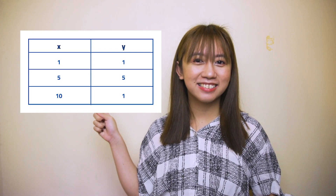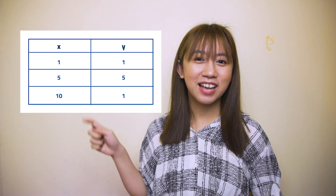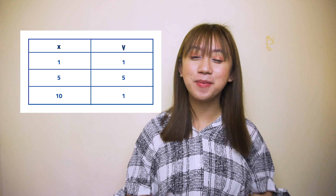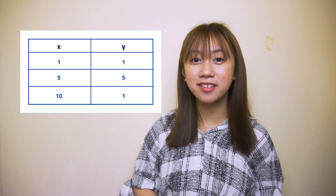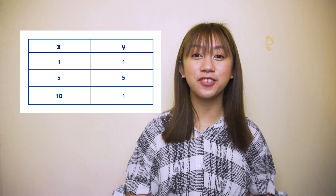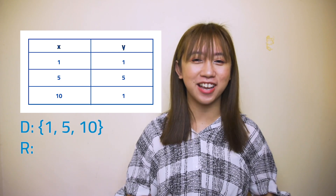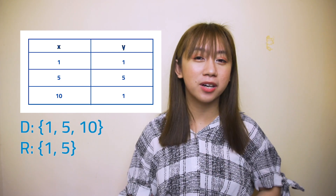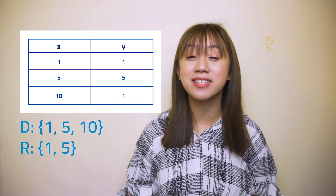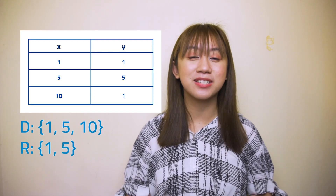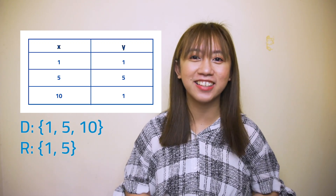How about this? Awesome! The set of domains are 1, 5, and 10, while the set of range are 1 and 5. Remember, even though 1 appears twice in the table, it is written only once when writing the range.